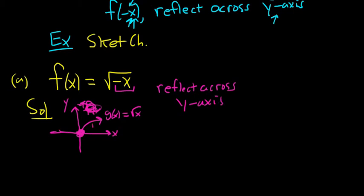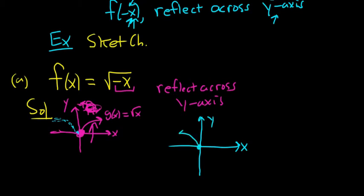So we take this graph and we just reflect it across the y-axis. It would just look like this dotted line here — just a reflection across the y-axis. There's the y-axis, there's the x-axis. And there it is — that's the graph of square root of negative x.